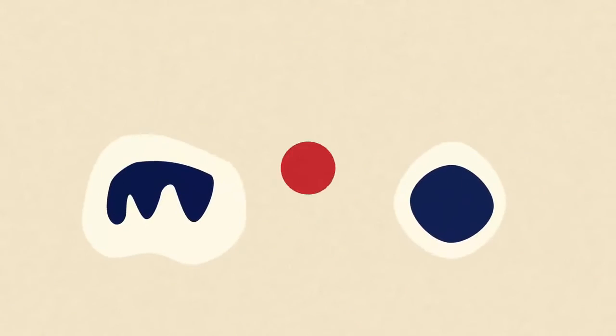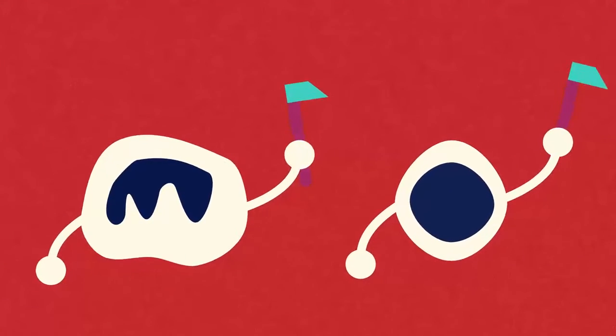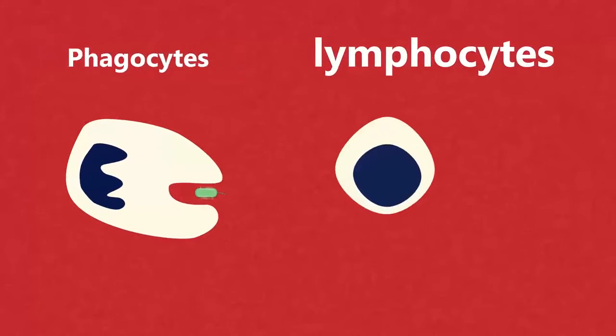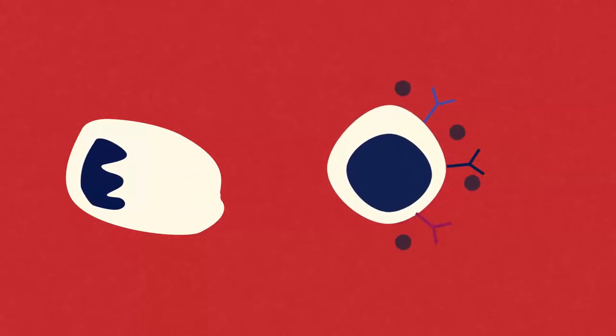They may only be 1% of our blood but our white blood cells can really pack a punch. You just need to remember that phagocytes engulf pathogens and lymphocytes produce antibodies and anti-toxins.